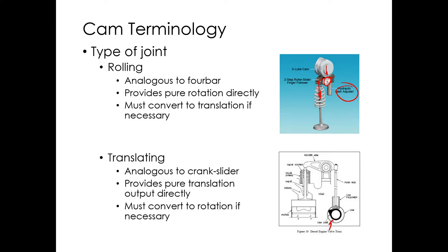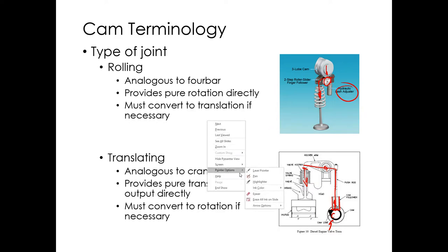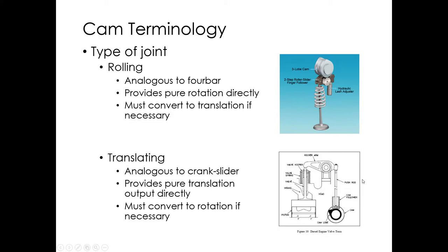Translating contact is found in an overhead-valve or cam-in-block engine where the cam sits in the engine block. It rotates and drives a follower — called a lifter in practice. In this case the cam actually slides past the surface of the follower rather than rolling on it. The cam rotates, pushes the lifter up, which pushes on a push rod, and then a rocker with a fixed revolute joint rocks and pushes the valve down. You could also put a roller on this lifter — a roller lifter — giving rolling contact instead.